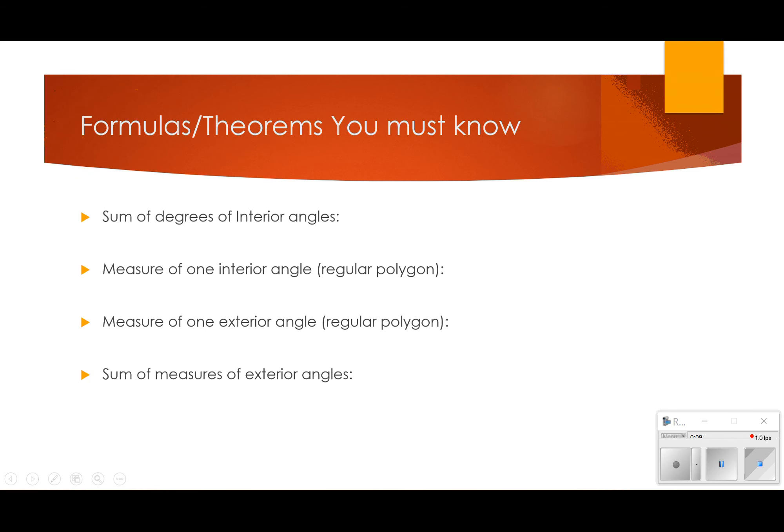All right. So, here I'm just going to pull out these theorems or formulas. They're actually theorems that you need to know. So, the sum of the degrees of the interior angle is n minus 2 times 180, where n is the sides. One interior angle of a regular polygon is n minus 2 times 180, all divided by n. An exterior polygon, the sum of all of them is 360 degrees, no matter how many sides. And then one regular interior angle is 360, divided by the number of sides. So, those are kind of summing up what you need to know.